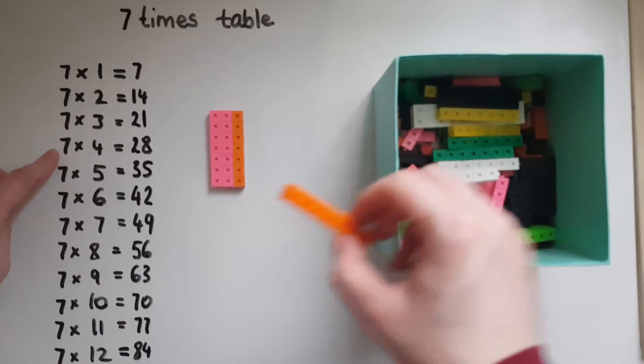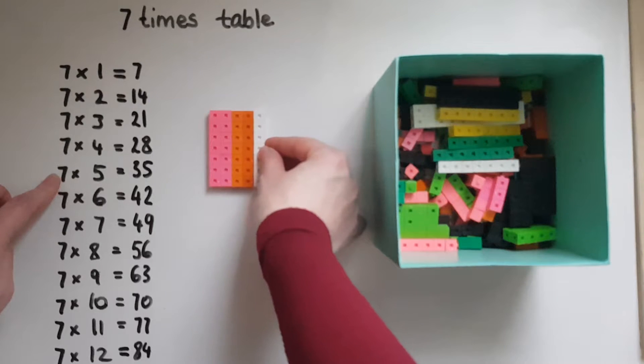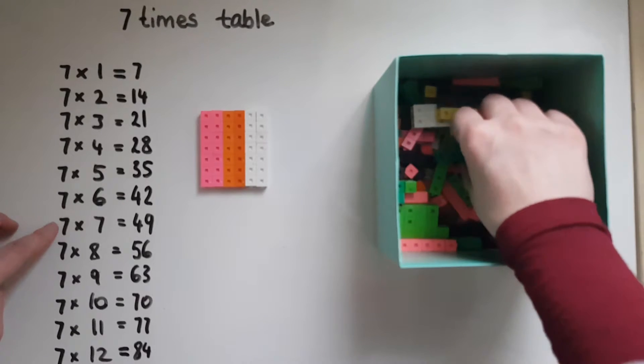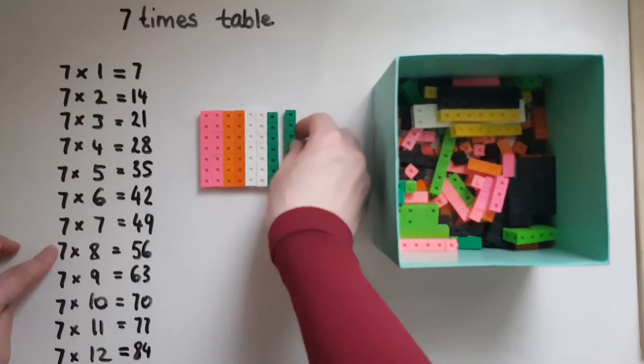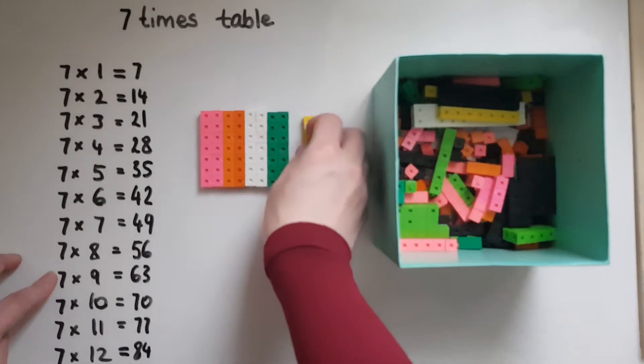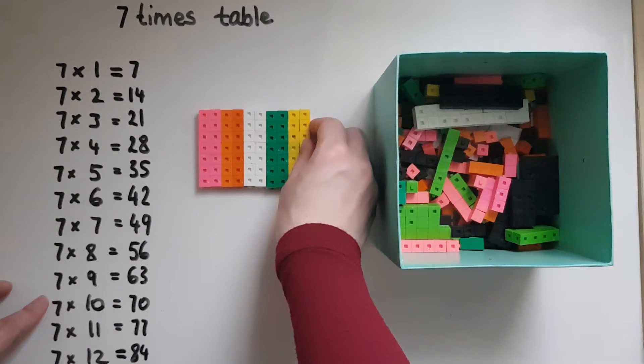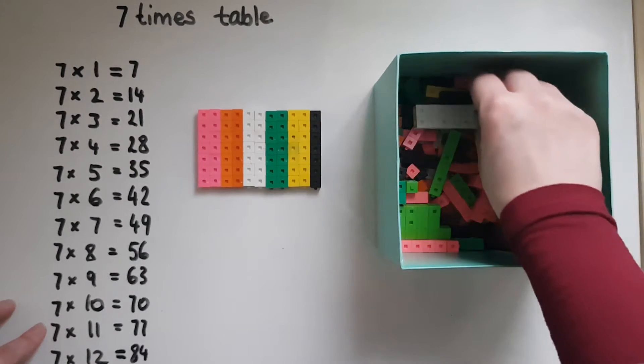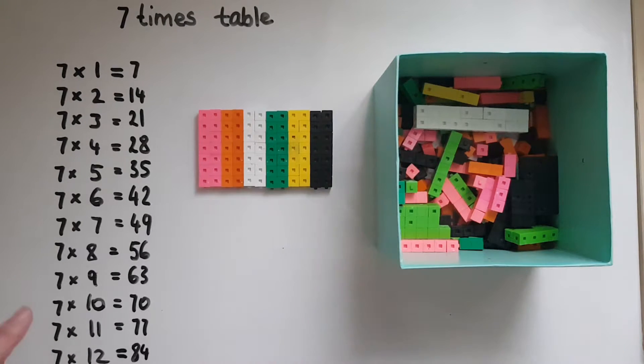Seven times four will give us twenty-eight, seven times five thirty-five, seven times six forty-two, seven times seven forty-nine, seven times eight fifty-six, seven times nine is sixty-three, seven times ten is seventy, seven times eleven is seventy-seven, seven times twelve is eighty-four.